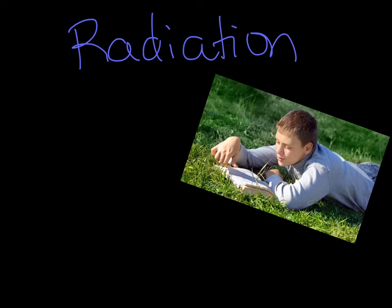When radiation is emitted from one object and absorbed by another, this is the transfer of energy through heat. The big difference between radiation and conduction or convection is that radiation can actually go through empty space — it moves from the sun to the Earth — unlike conduction and convection, which have to be touching or moving with something.